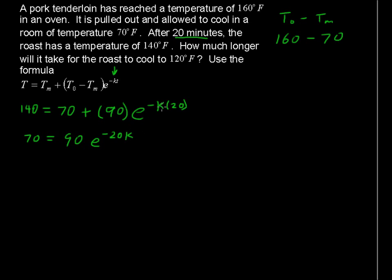A little bit easier to write it like that, rather than negative k times 20. Divide each side by 90, and you get 7 over 9 equals E to the negative 20k.